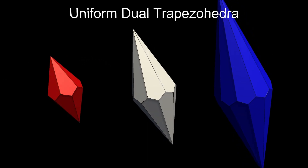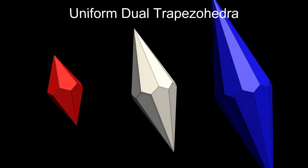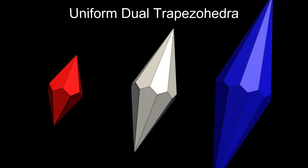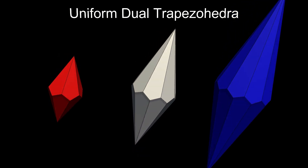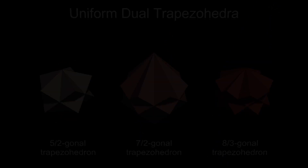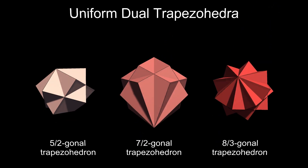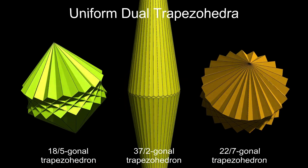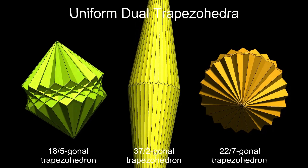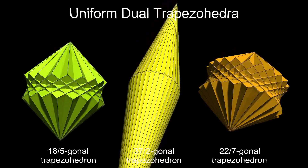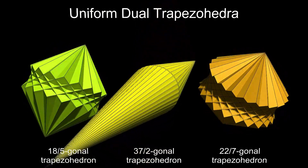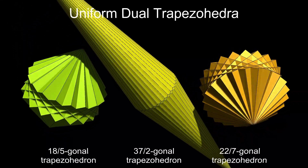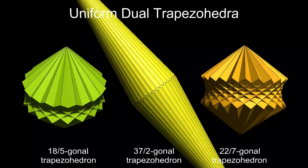The dual of an antiprism is a trapezohedron. As with bipyramids, convex trapezohedra are fairly simple, like these shapes. But non-convex trapezohedra are more complex, especially when the density is high. Trapezohedra have kite-shaped faces that become taller with the number of sides and broader with the density. A combination of high number of sides and high density results in some magnificent shapes.